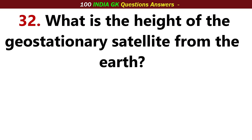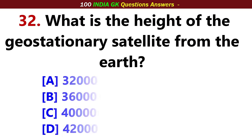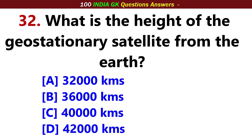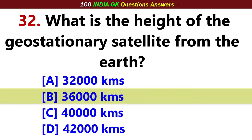What is the distance of the geostationary satellite from the earth? Option B: 36,000 km.